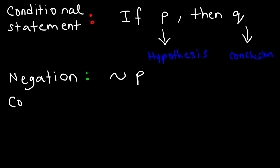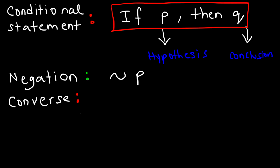Now, what about the converse? The converse is basically the reverse of the conditional statement — you just switch Q and P. So if Q, then P. That is the converse. If the conditional statement is true and the converse is true, what you have is a biconditional statement. But the converse is not always true — sometimes it's true, sometimes it's not.